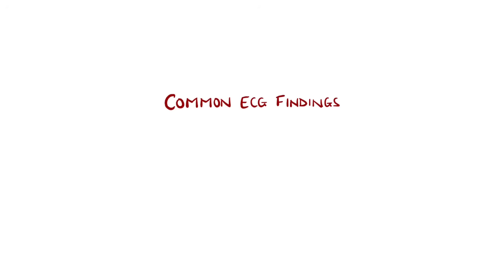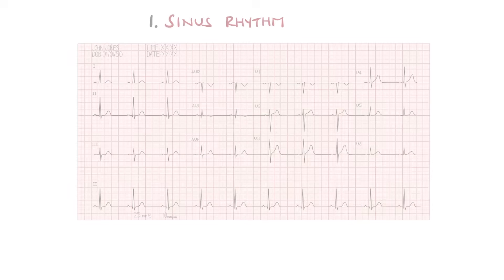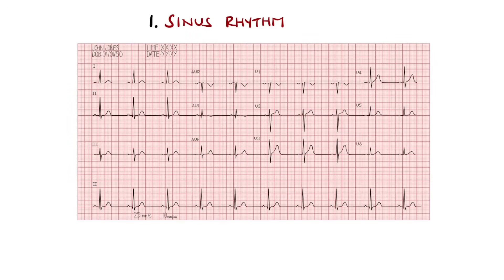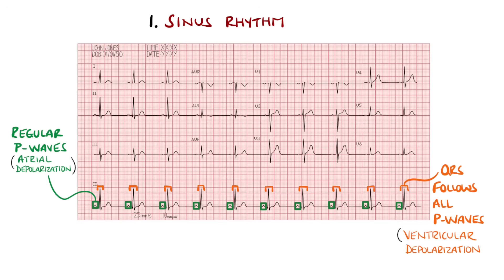In this video we will look at some of the most common and must-know ECG findings in medicine. We start with sinus rhythm, the normal rhythm of the heart. There are regular P waves followed by a QRS complex that represents normal conduction of the electrical signals from the sinoatrial node in the right atrium through the atrioventricular node and bundle of His into the ventricles.